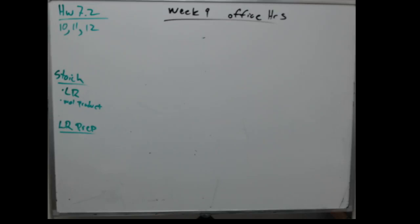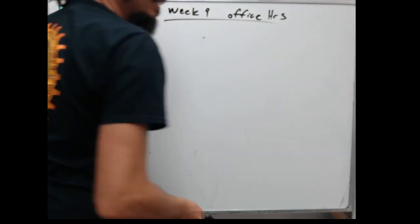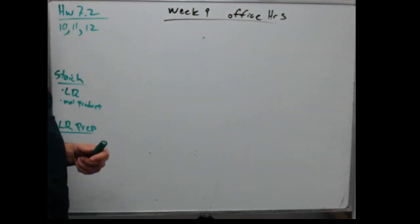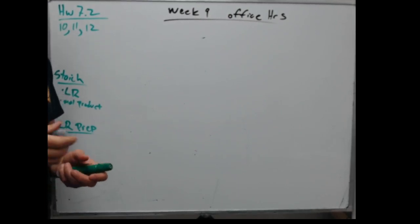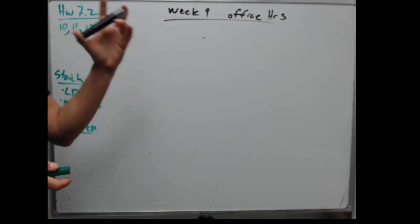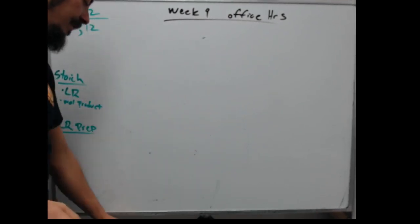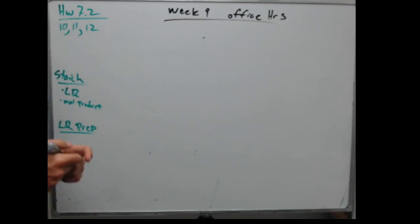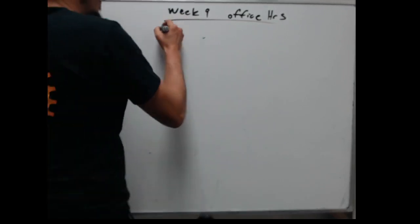Week 9 office hours. We're going to look at homework 7.2, a couple problems from there, then we're going to talk about stoichiometry and the limiting reactant prep activity. Let's start with the 7.2 stuff — that's material from last week that will be on the quiz tonight.